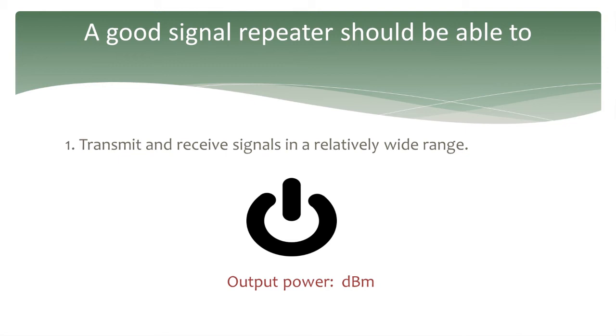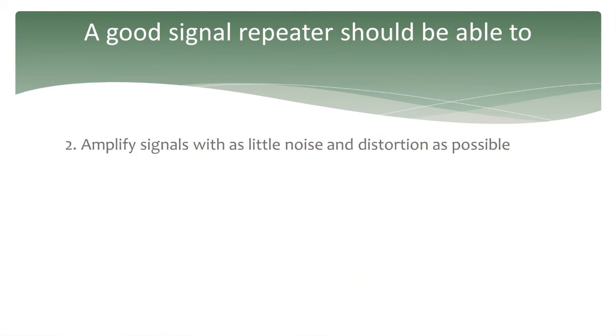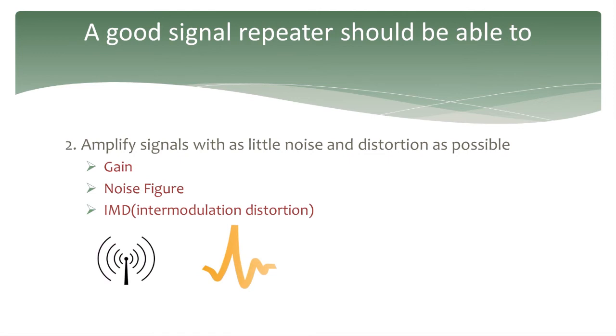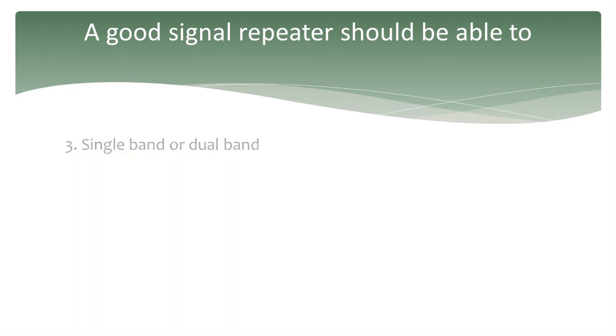Two, amplify signals with as little noise and distortion as possible. You should look for gain, noise figure, and IMD or intermodulation distortion in the specs. The gain specifies how much the signals are amplified. With the same gain, we prefer a smaller noise figure number and a larger IMD number.